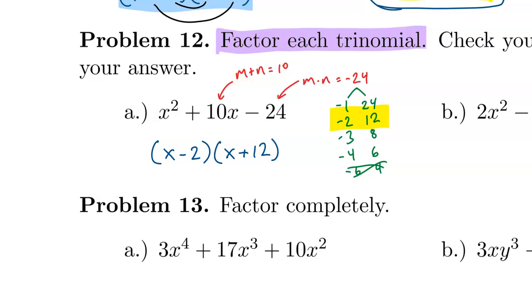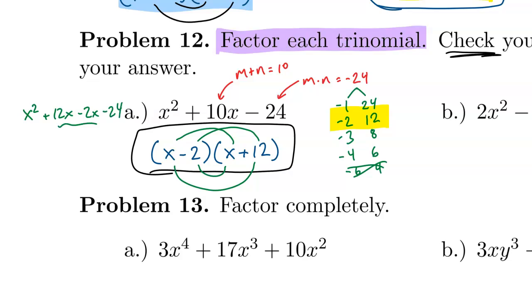Of course, it's a great idea to check, especially with factoring problems. It's good to make sure that this is actually the answer that I want, and I can check by multiplying this back out by foiling. If I multiply together the two x terms, I get x squared. x times 12 is 12x. Negative 2 times x is negative 2x. And negative 2 times 12 is negative 24. Combining those like terms, the x terms, I get what we started with: x squared plus 10x minus 24.